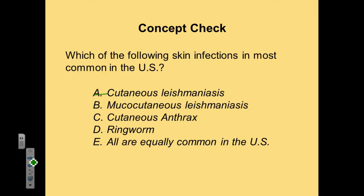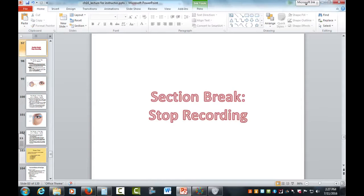Both cutaneous and mucocutaneous leishmaniasis are not common in the United States — those are diseases limited to tropical areas. Cutaneous anthrax is also not common in the United States. Ringworm, though, is quite common in the United States, so the correct answer is D. If you have any questions about this material, please feel free to post them on the discussion board or shoot me an email. Happy studies!